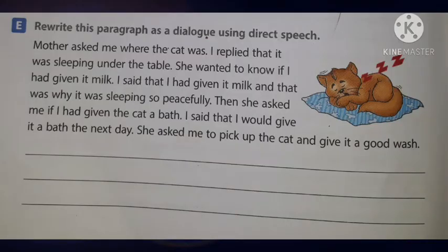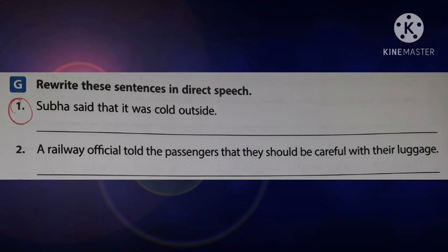Activity E: Rewrite this paragraph as a dialogue using direct speech — do it yourself. Do Activity F also. Activity G: Rewrite these sentences in direct speech. First one — Shubha said that it was cold outside. It is simple past, so we change it to simple present. Shubha said, 'It is cold outside.' Do the rest of the activities yourself.